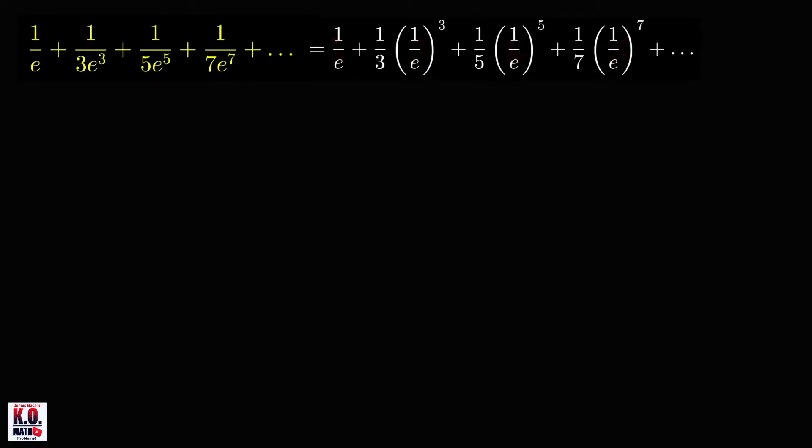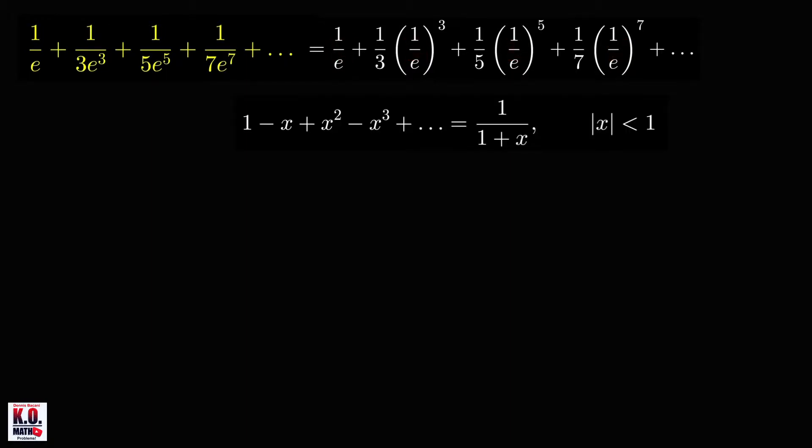So we first start with the geometric series 1 minus x plus x squared minus x cube plus and so on, which is equal to the first term, which is equal to 1 over 1 minus the common ratio. And the common ratio here is negative x.